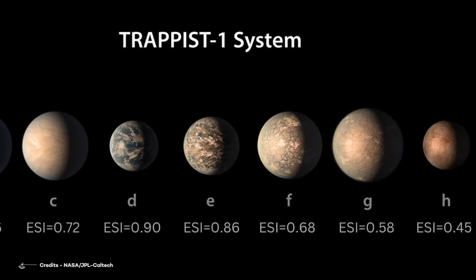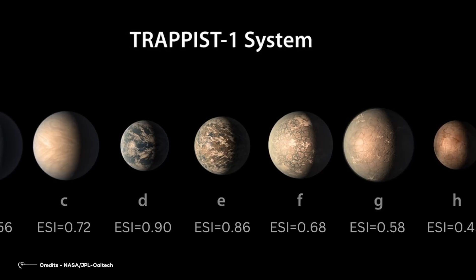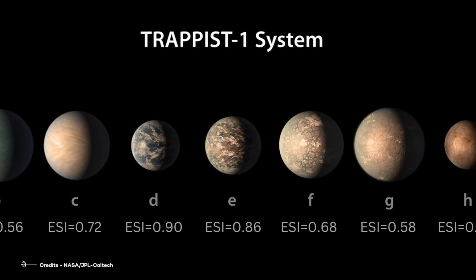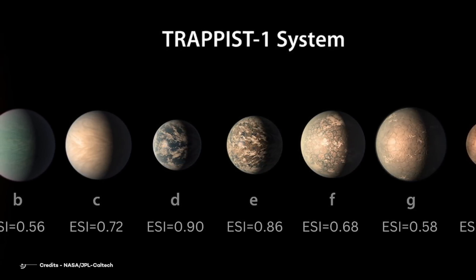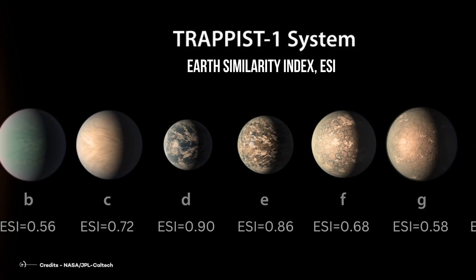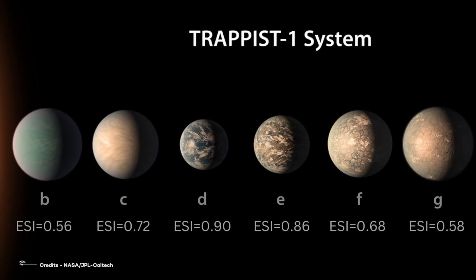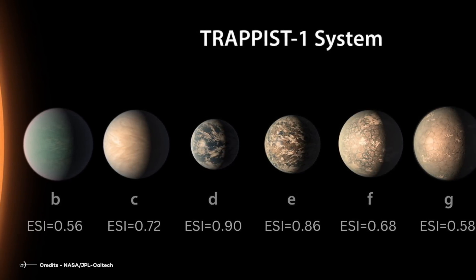This is an artist's representation of the TRAPPIST-1 system, with the exoplanets at scale between each other and the host red dwarf star. Every planet is associated with an Earth Similarity Index. It tells us how similar a planet is to Earth.